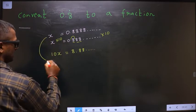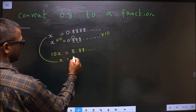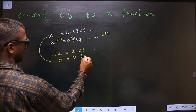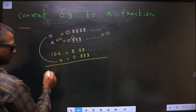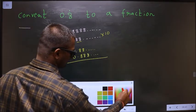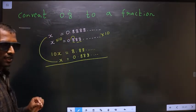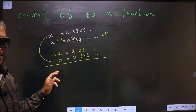Now I write this here: 0.8888 and so on. Now you should subtract these two.